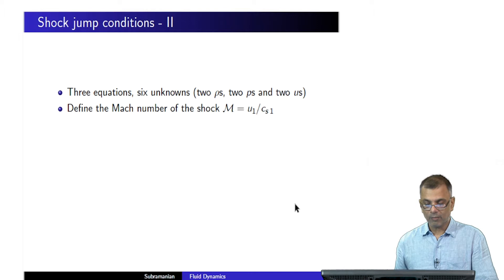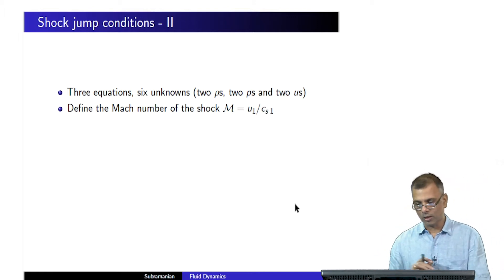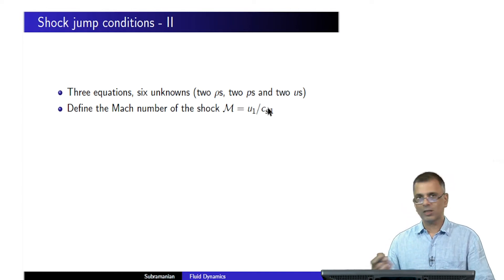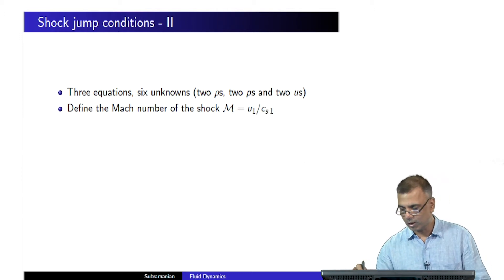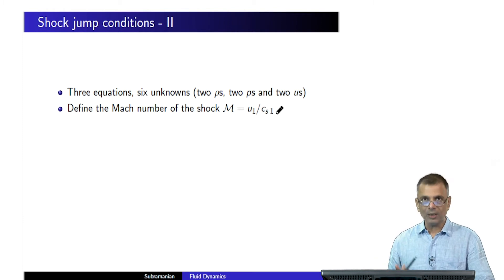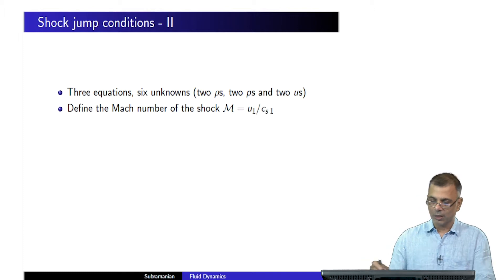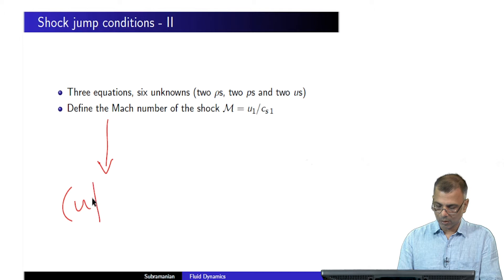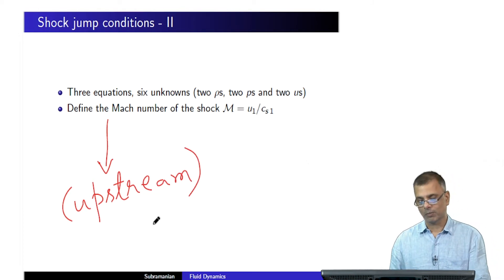Let's define the Mach number of the shock as u1 over Cs1. This is by definition — we could have defined another Mach number as u2 over Cs2 with respect to the downstream quantities, but by convention, one speaks of the upstream Mach number of the shock.